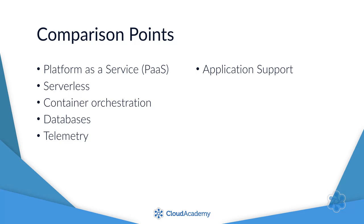Application support is a grab bag for all of the other kinds of things you'll need to build, deploy, and run an application in production. This covers automation, pipeline management, messaging, and things like that. Data engineering is another grab bag covering data analytics, real-time processing, warehousing, and visualization.